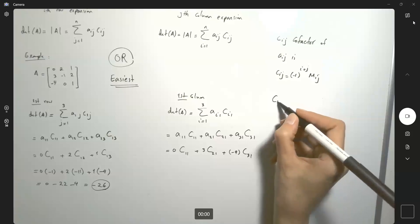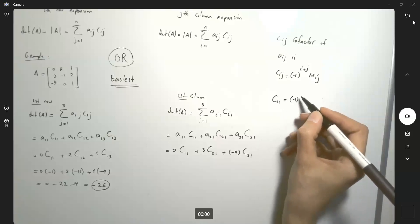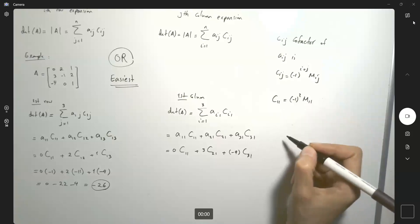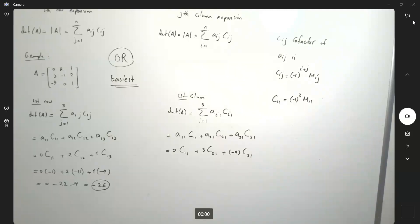What is C1,1? By definition, (-1)^2 times M1,1. So again, what are we doing? We are eliminating the first row and the first column. Here we go.